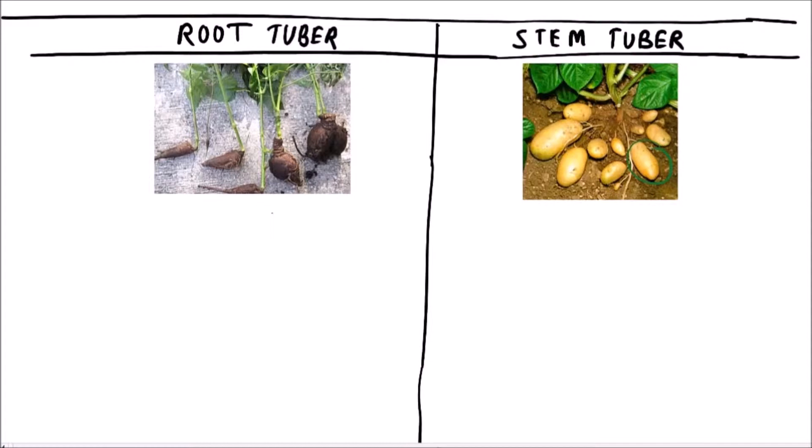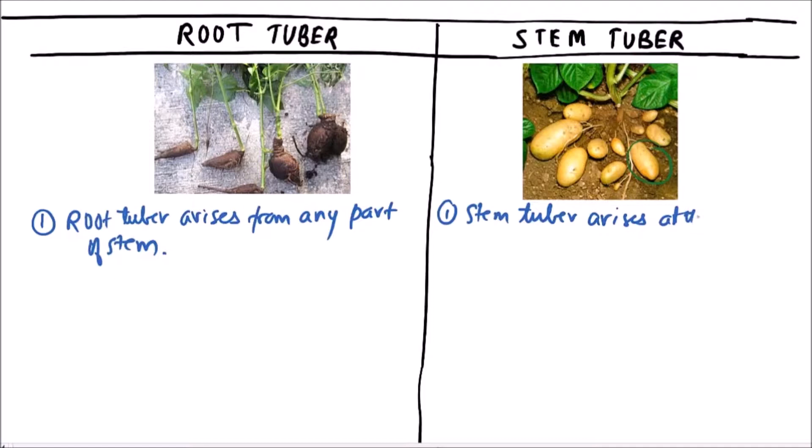In the case of root tuber, the root tuber arises from any part of the stem, while the stem tuber arises at the tip of stem branch.